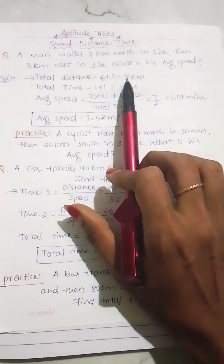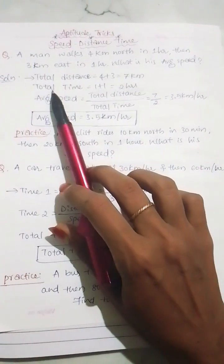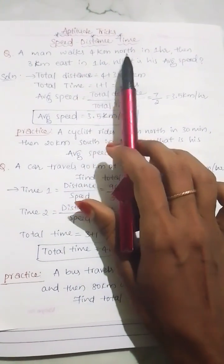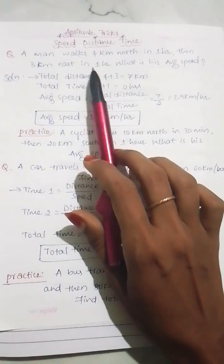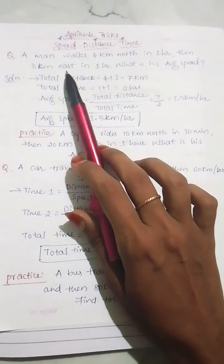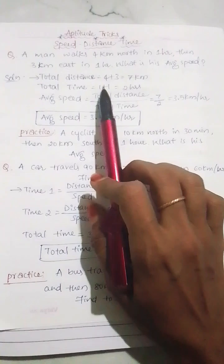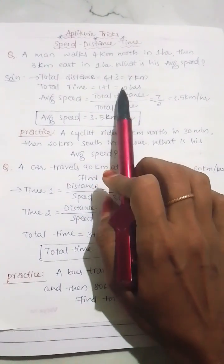The total distance he walked is 7 km, and the total time is 1 hour to walk 4 km north and 1 hour to walk 3 km east. So the total time is equal to 1 plus 1, that is 2 hours.